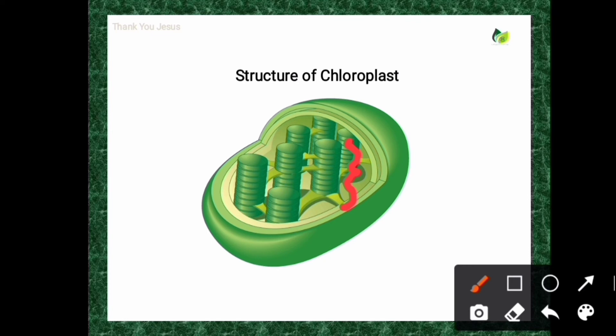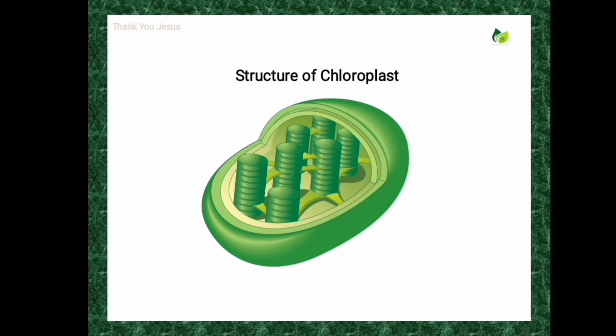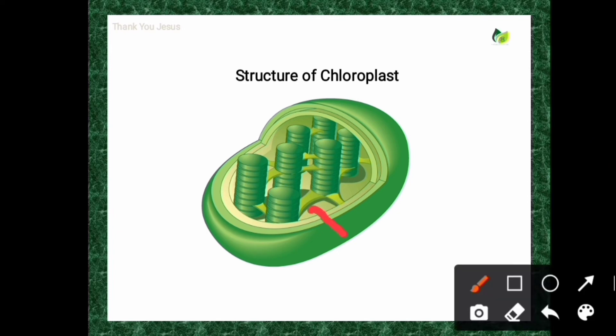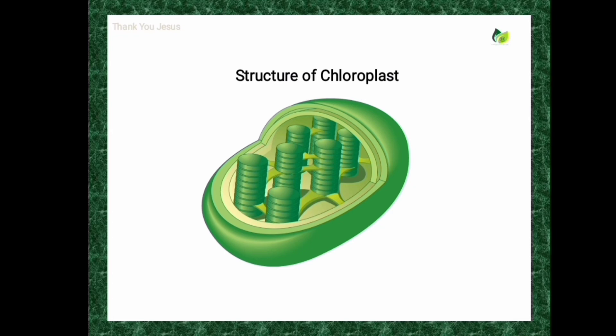Each chloroplast has nearly 40 to 60 grana in its matrix. The thylakoids of adjacent grana are interconnected by branching membranous tubules called stroma lamellae or stroma thylakoids.